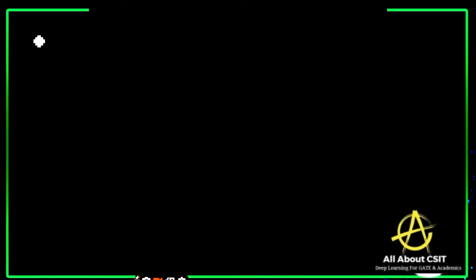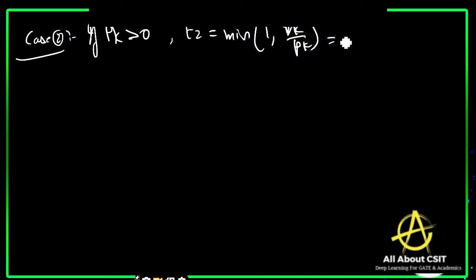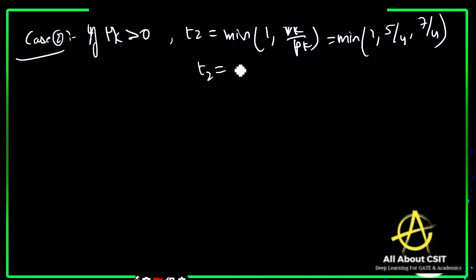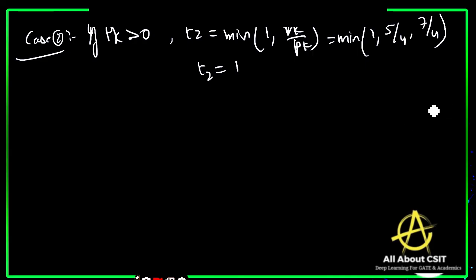Case 2: for pk > 0 (which applies to p2 = 4 and p3 = 4), compute t2 = min(1, qk/pk). Taking q2/p2 = 5/4 and q3/p3 = 7/4, we get t2 = min(1, 5/4, 7/4) = 1.